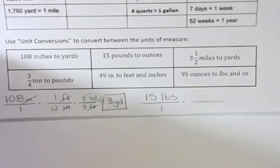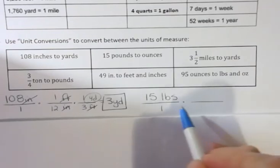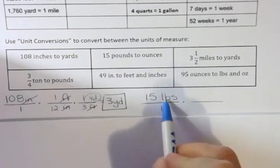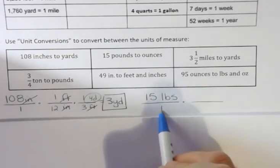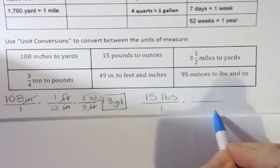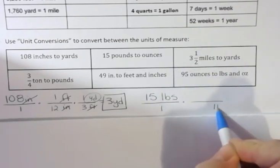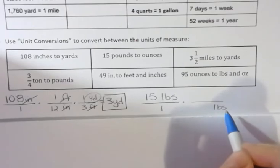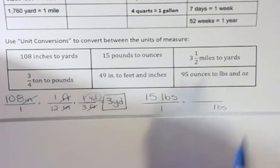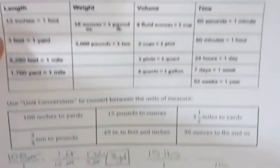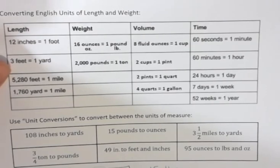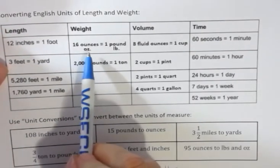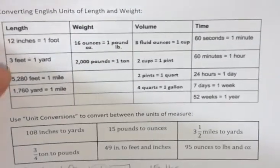What about the second one, 15 pounds into ounces? So I always put the unit that I want to get rid of is on the top with the one under it. And then I put those units on the bottom so that they'll cancel. So we have pounds. And then there was, if we look back at our chart, there's 16 ounces in one pound.